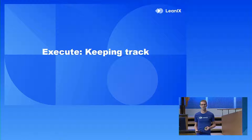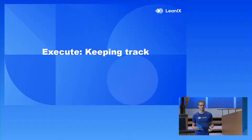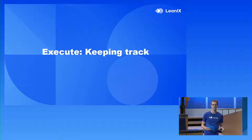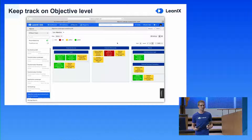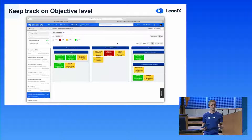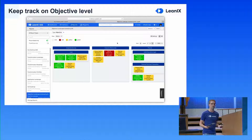This leaves us one last topic for today: execution and keeping track of all the things going on within your organization. Let's time-warp into 2021 — let's assume we stuck to the plan we created and we're in the middle of implementing that scenario. The first thing I want to understand is the state of my objectives, so I'm jumping back to the objective landscape where I see all objectives clustered by business capabilities.